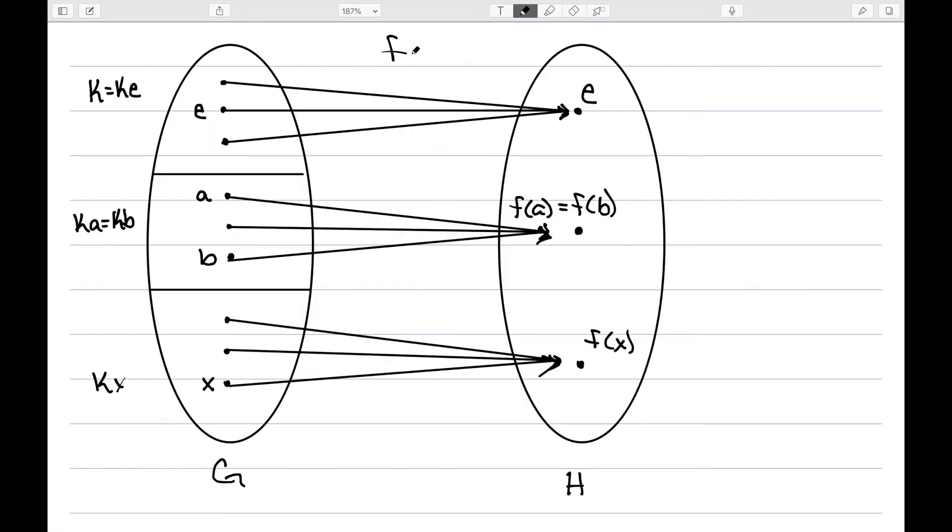Here's a diagram that kind of shows what was happening in this theorem. For my domain, I'm going to break it up into cosets of the kernel. So this would be the kernel K, this is the coset KA or KB, this is the coset KX, etc. And then when I apply my homomorphism, everything in the kernel maps to the same element. Everything in this coset maps to the same element. So we're mapping entire cosets to a single element.